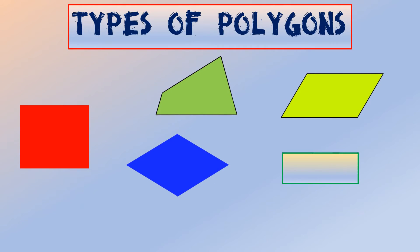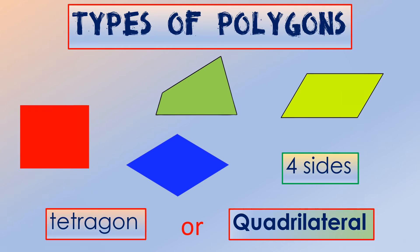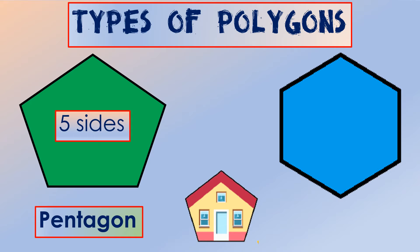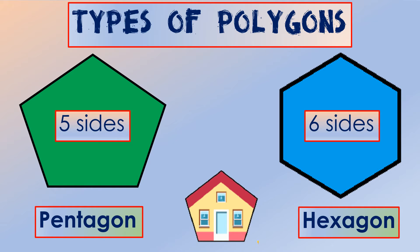A polygon with four sides is called a tetragon, commonly known as a quadrilateral. A pentagon is a polygon with five sides, and a hexagon has six sides.